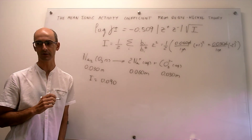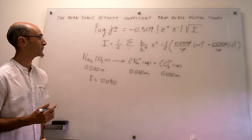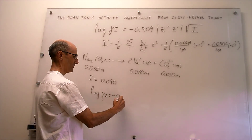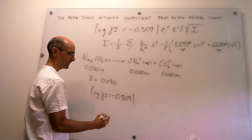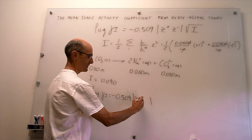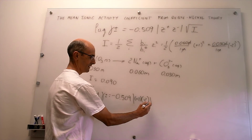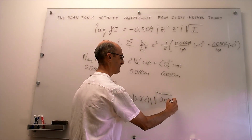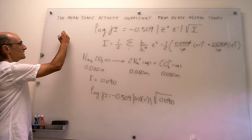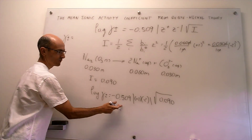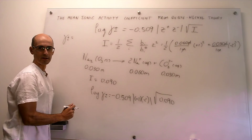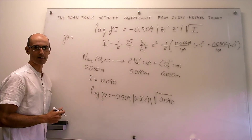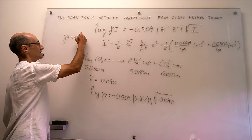The only thing that remains is to calculate the activity coefficient. Plugging in all numbers: log(γ±) = −0.509 times the absolute value of the product of the charges — which is |+1 × −2| = 2 — times the square root of 0.090 (the ionic strength). What we are calculating here is the base-10 logarithm of γ±, so we must take 10 to that power to obtain γ±. After doing that, we find that this activity coefficient is 0.49.